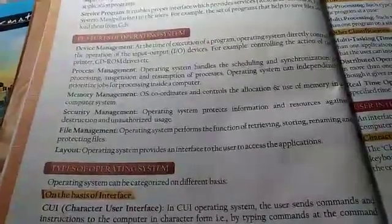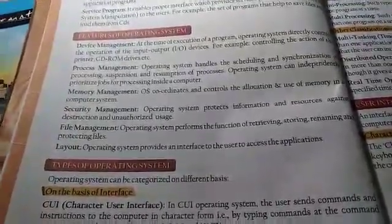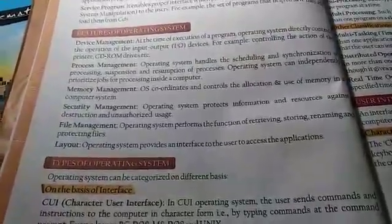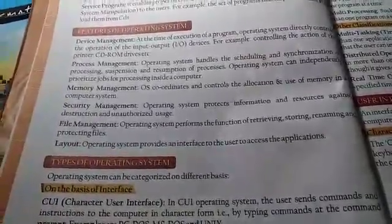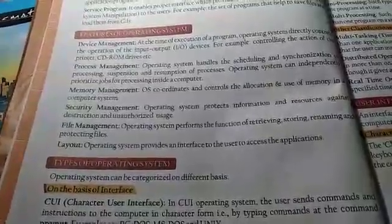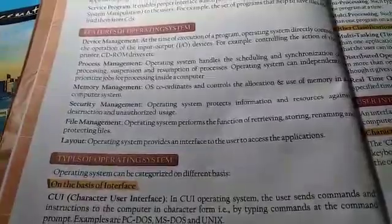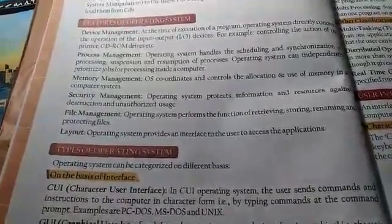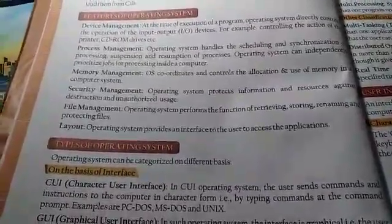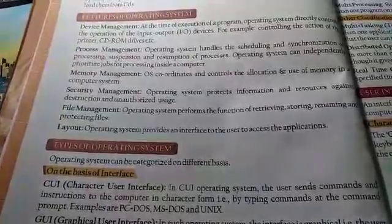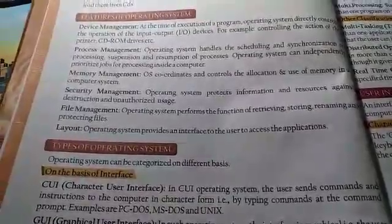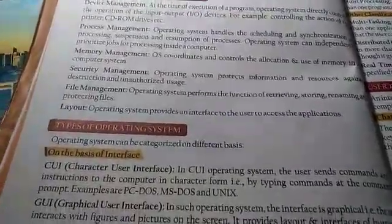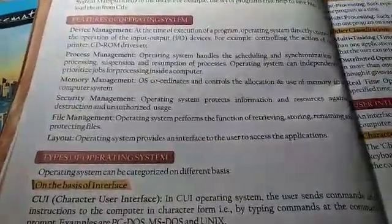The next job of the Operating System is Security Management. The Operating System is responsible to ensure that no unauthorized person uses your computer, and that no malicious data enters your system — malicious means those unwanted programs that can harm the computer system. File Management covers all functions such as storing a file, renaming a file, and retrieving (which means to take out the file from a stored place), and is done by the file management function of the Operating System.